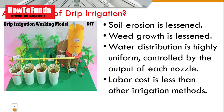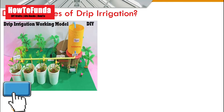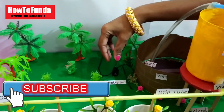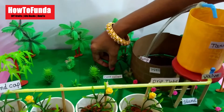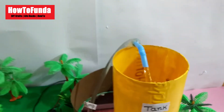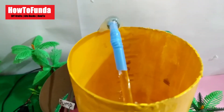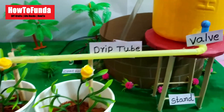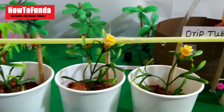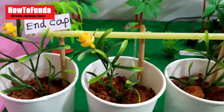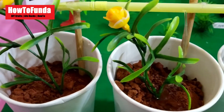Now let's understand the disadvantages of drip irrigation. The first disadvantage is that the initial cost for implementing drip irrigation is a little higher. The second disadvantage is that the pipes are made of plastic, and because of sunlight these plastic pipes can get affected — their lifespan is only three to five years, after which you have to invest money again to replace them.